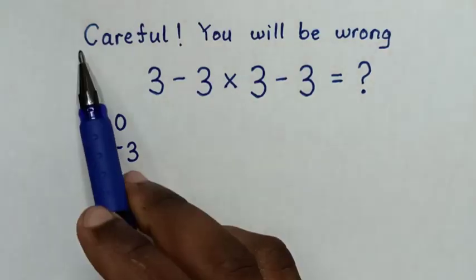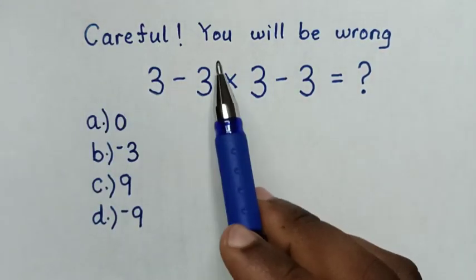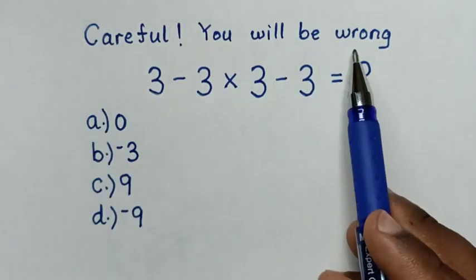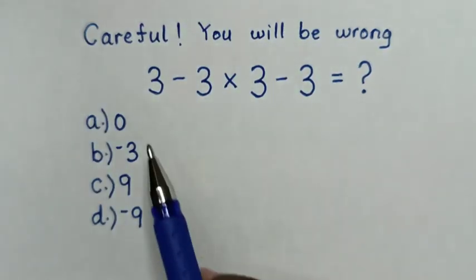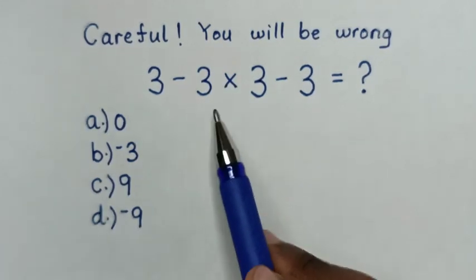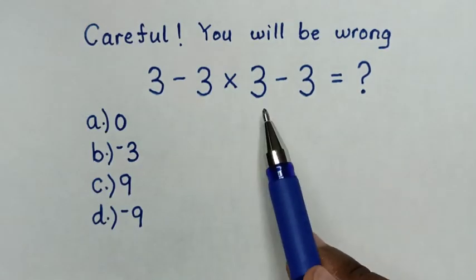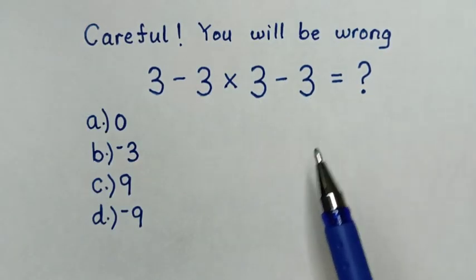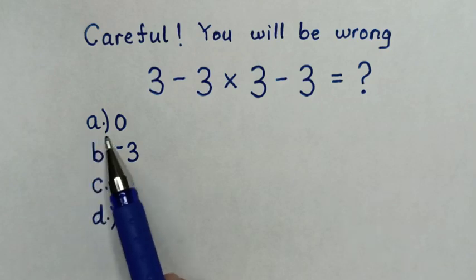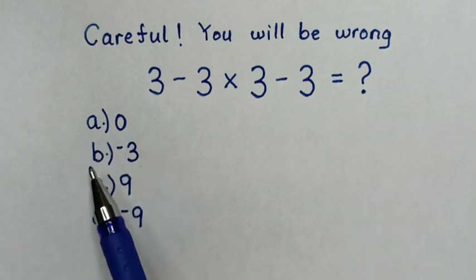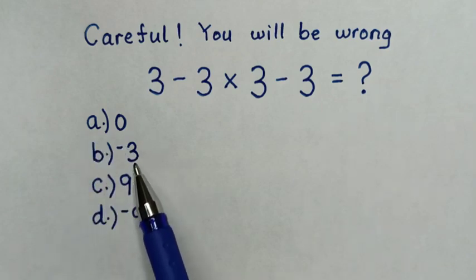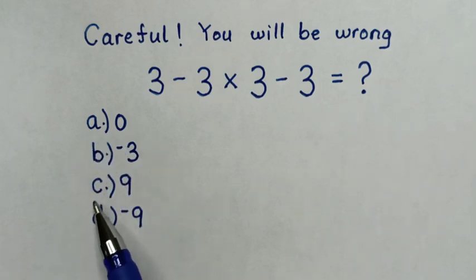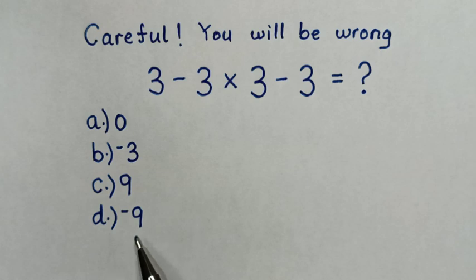Hello. Careful, you will be wrong to solve 3 minus 3 times 3 minus 3 by selecting the answers in A: 0, B: negative 3, C: 9, D: negative 9.